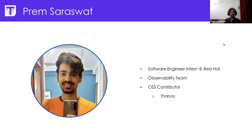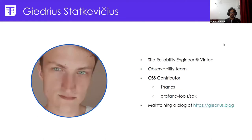My name is Prem. I am currently a software engineer intern at Red Hat. I'm working with the observability platform team. I have been an open source contributor to Thanos for quite some time — since last year when I started my GSoC project with them.